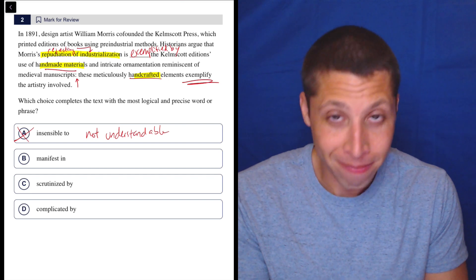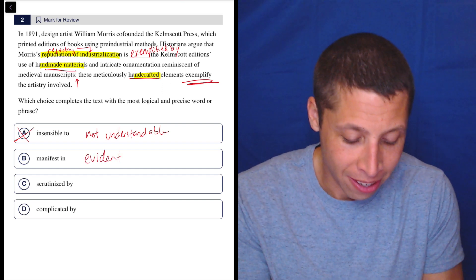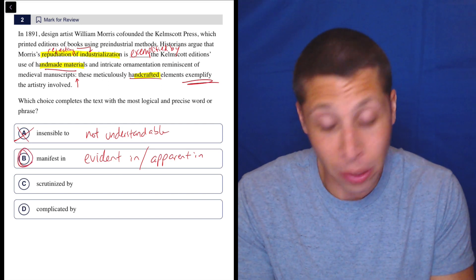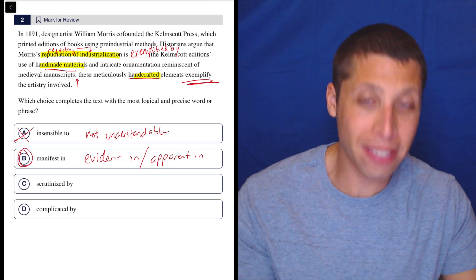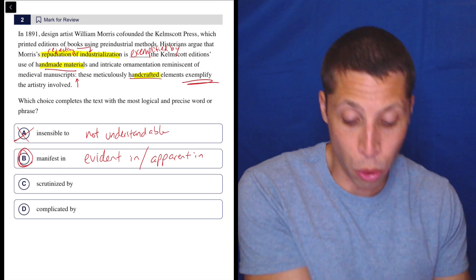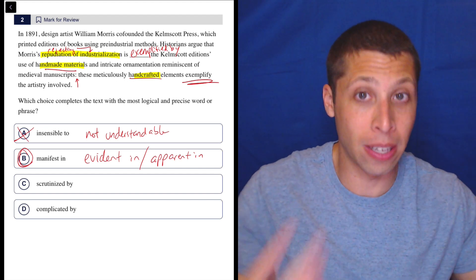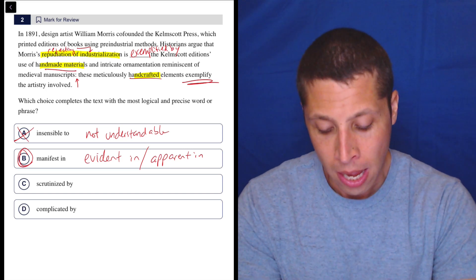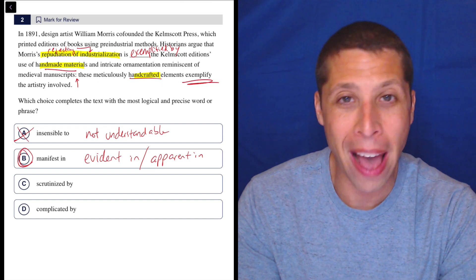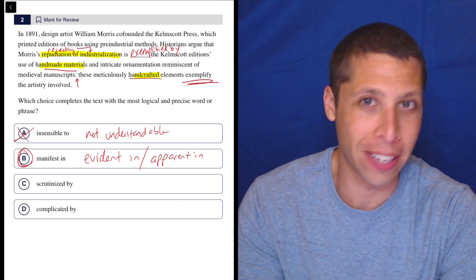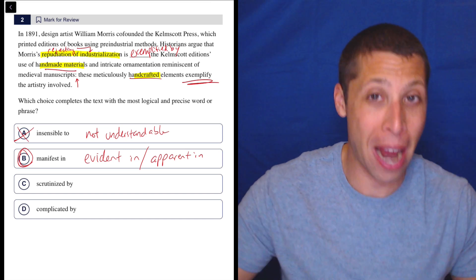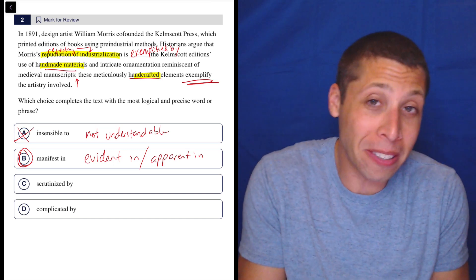Manifest in means like evident in or apparent in. It basically means what we want it to mean. It's the answer. So we're going to look at the other choices, but yeah, it basically means that his rejection of industrialization is obvious by looking at these Kelmscott editions. It's just existing within it. It's obvious by looking at them. Hard word, not a word I would use very often in my own life, but I do know what it means. Maybe you think of like to manifest something like, oh, I'm going to manifest a good grade on the SAT. That kind of means to make it come about. So there's a little bit of a relationship here to make it evident, to make it apparent, to make it real.